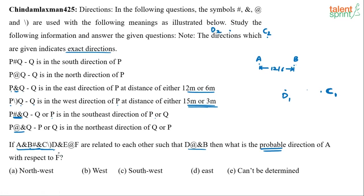Before moving further, the problem states they are related such that D at-rate-ampersand B must be satisfied. We currently have D and B with two possibilities: B-D2 or B-D1. The condition D at-rate-ampersand B means either D is in the northeast direction of B, or B is in the northeast direction of D.